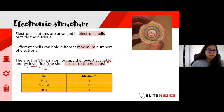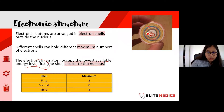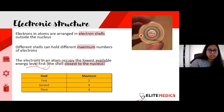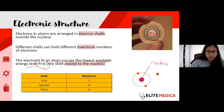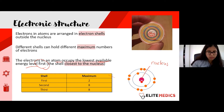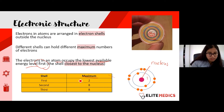The rule in chemistry is that electrons like to fill shells from the shell closest to the nucleus, then move outwards. This is what we mean by occupying the lowest available energy level. The first shell, closest to the nucleus, has a maximum of two electrons. If the atom has more electrons, we unlock the next shell, which has a maximum of eight.